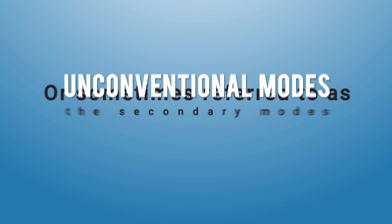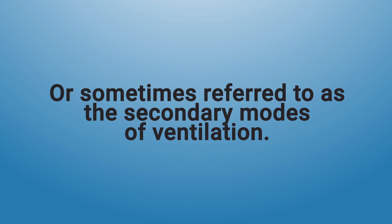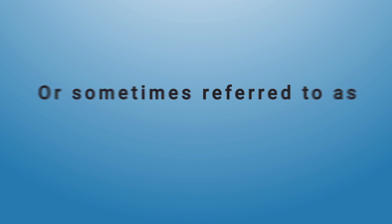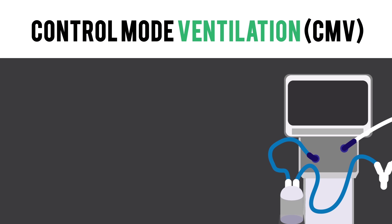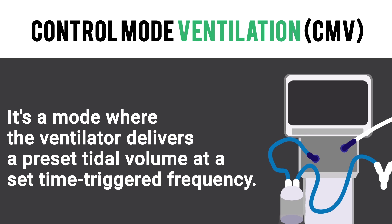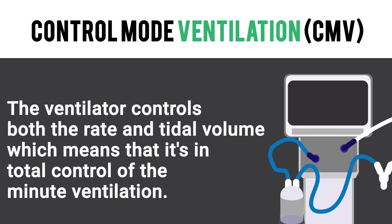Now let's talk about the unconventional modes, sometimes referred to as the secondary modes of ventilation. First we have control mode ventilation, or CMV. This is a mode where the ventilator delivers a preset tidal volume at a set time-triggered frequency. Basically, the ventilator controls both the rate and the tidal volume, meaning it is in total control of the minute ventilation.